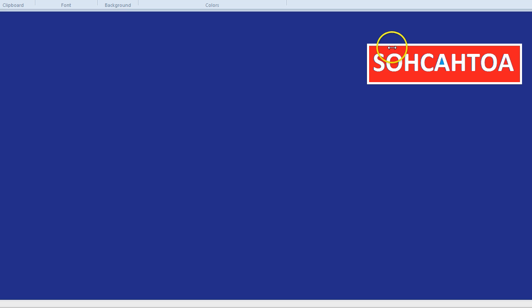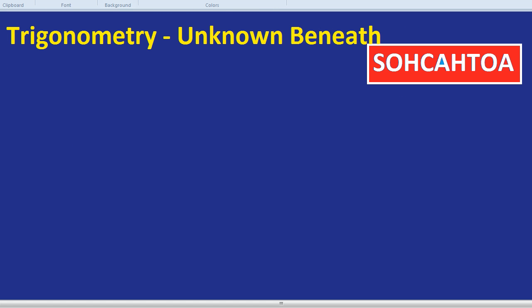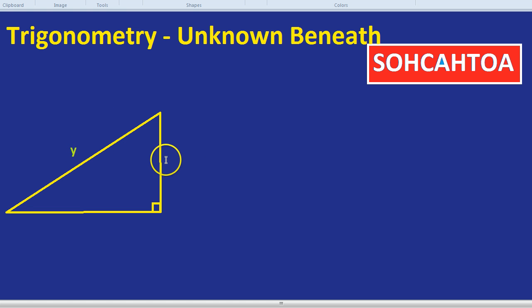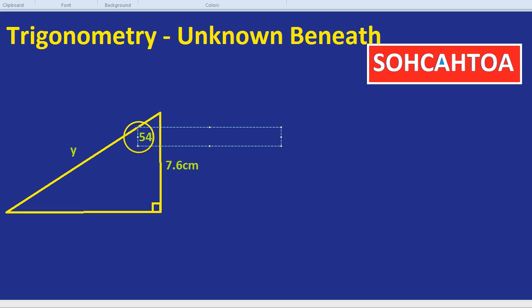Let's draw a triangle so we can have an example to show you what I'm talking about. Here's our right angle triangle and we can tell it's right angled because we have the little box in the corner. In this example we're going to be given one of the sides. This is Y, let's call it side Y and this side here is 7.6 centimeters. We have an angle here of 54 degrees and our challenge is to find the side Y.